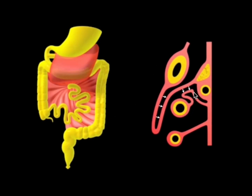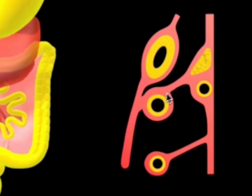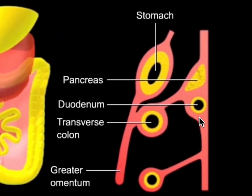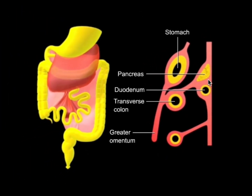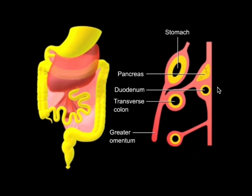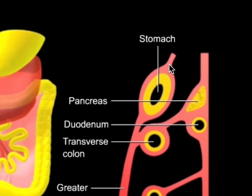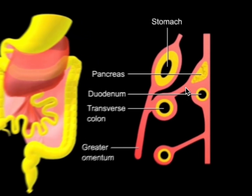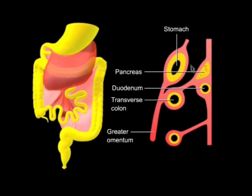The greater omentum will fuse with the mesentery of the transverse colon — the transverse mesocolon. The peritoneum overlying the distal duodenum, pancreas, and also the ascending and descending colon is fused to the posterior body wall, making these organs retroperitoneal — sandwiched between the peritoneum and the posterior body wall. By contrast, the rest of the small intestine, appendix, transverse colon, sigmoid colon, and even the stomach are suspended within the peritoneal cavity by mesentery, making them intraperitoneal organs.